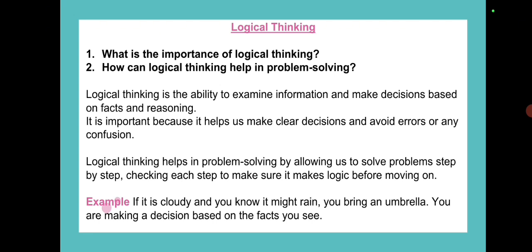Logical thinking is the ability to examine information and make decisions based on facts and reasoning. It is important because it helps us to make clear decisions and avoid errors or any confusion. In problem-solving, it makes sure we use logic before moving on. Example: if it is cloudy and you know it might rain, you bring an umbrella. You are making a decision based on the facts you see.